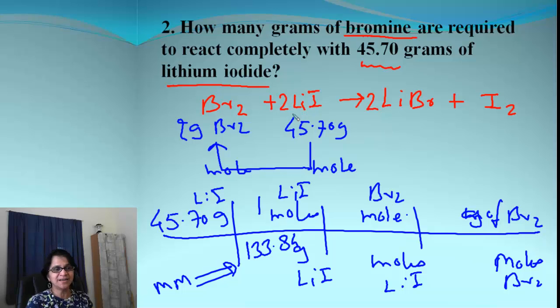So the balancing will be 2 LiI and that will be 2 here. So when we end up balancing, we get lithium iodide 2. And then for bromine, it is 1. So there you go. 1 and 2. And then back to bromine.